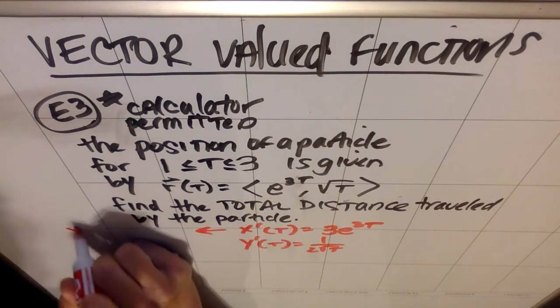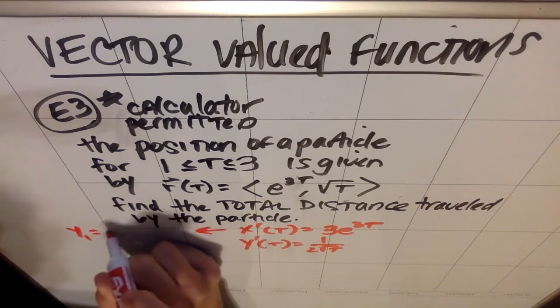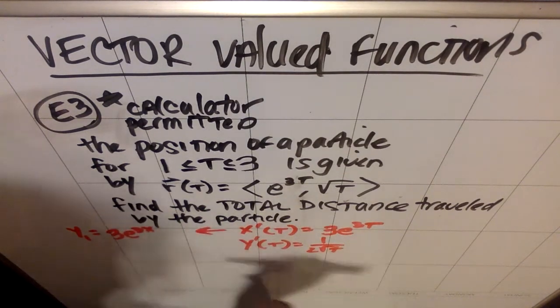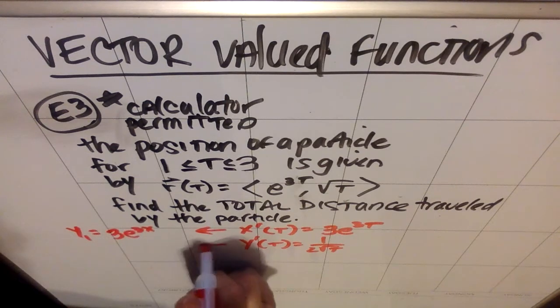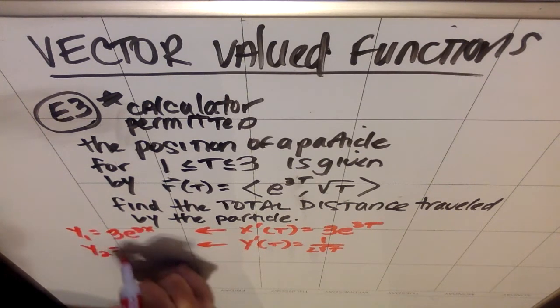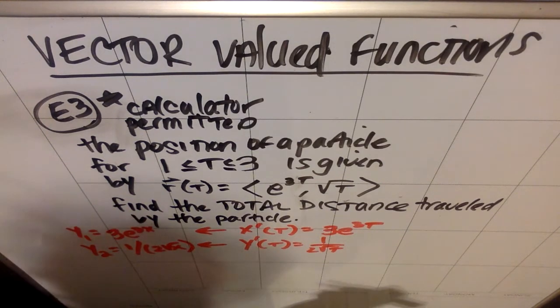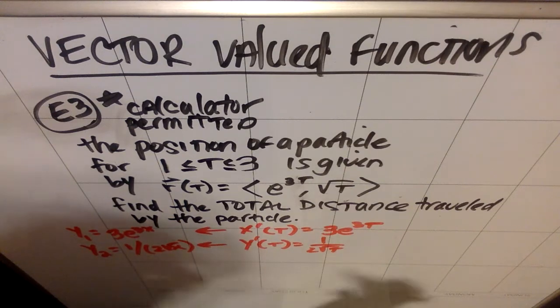So what I'm going to do is I'm going to put my x prime in as y1 in my calculator. I'm going to do 3e to the 3x. So I'm using x in place of t, and my y prime I'm going to call y sub 2 and I'm going to put in 1 divided by 2 root x. So that's what I'm going to put in my calculator as my y1 and y2.